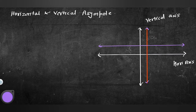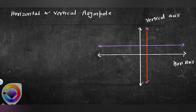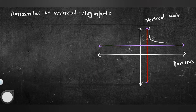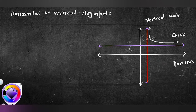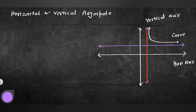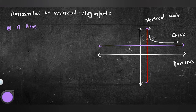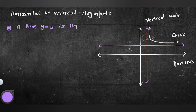Horizontal asymptote y = b کو کہتے ہیں، اور vertical asymptote x = a کو کہتے ہیں۔ Y = b والی line horizontal asymptote ہے اور x = a والی line vertical asymptote ہے۔